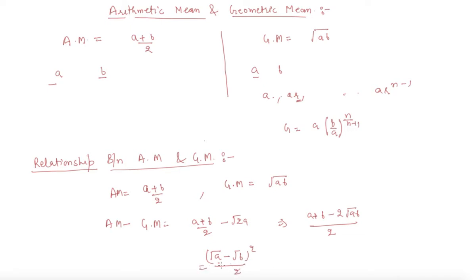Certainly students, I can say that if it is a square of any number, then the square will always be greater than 0. From this relation, this is AM minus GM, so what I am getting here is AM minus GM is always greater than or equal to 0.